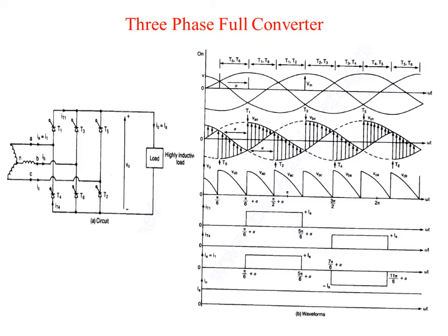The firing sequence of the thyristors is T1, T2, T2, T3, T3, T4, T4, T5, T5, T6, T6, T1. Figure B shows the waveforms for input voltage, output voltage, input current, and current through each thyristor.